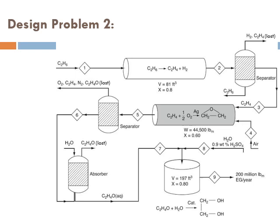Why do we need to talk about pressure drop? We need to design the second reactor in our ethylene glycol chemical plant. The reaction is ethylene with oxygen to form ethylene oxide. To carry out this partial oxidation without combusting ethylene, we need a catalyst packed inside a tube — a packed bed reactor. When flow passes through a packed bed, there is pressure drop, and hence we need to study it.